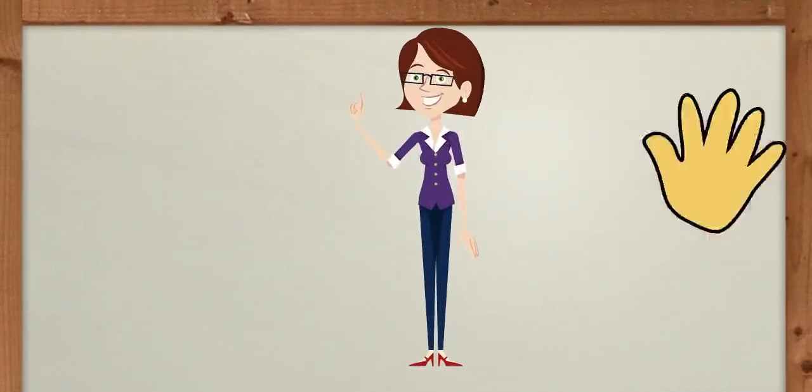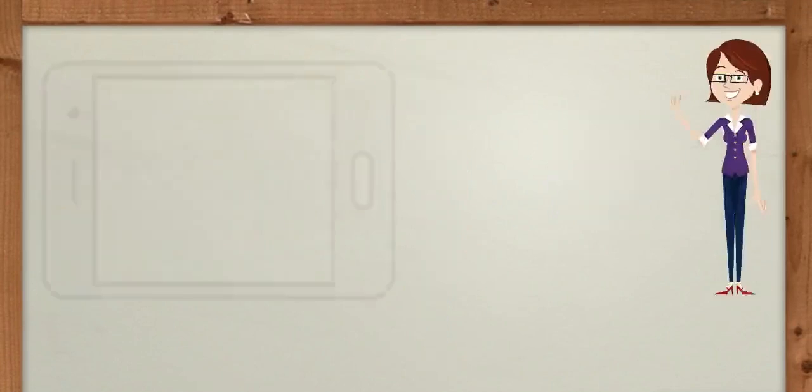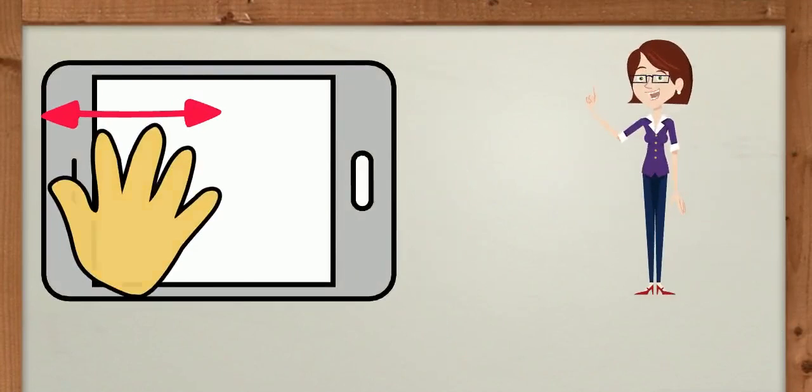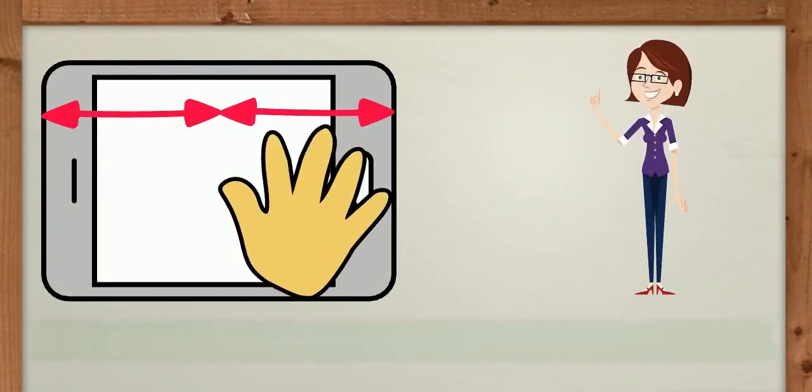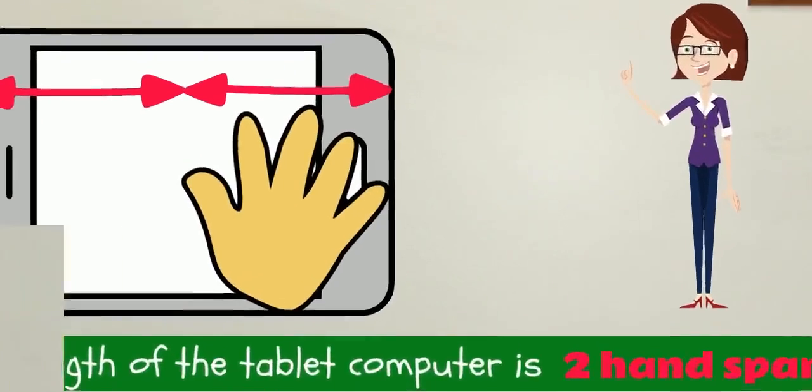With the help of handspan, let us measure this tablet computer. One and two. The length of the tablet computer is two handspans.